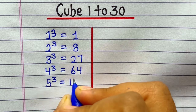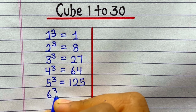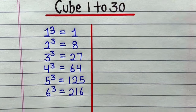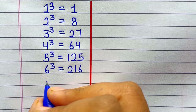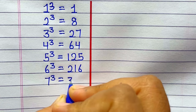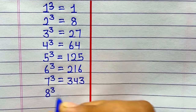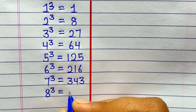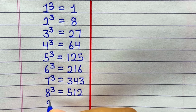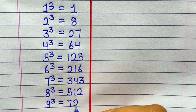5 ka cube hai 125. 6 ka cube hai 216. 7 ka cube hai 343. 8 ka cube hai 512. 9 ka cube hai 729.